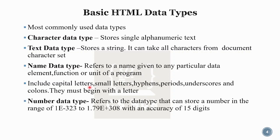The number data type means it can store any number. The range is from 1e-323 to 1.79e+308 — a vast range of positive and negative numbers. Any number — real, fractional, or integer — can be used, with an accuracy of 15 digits. The floating point precision is 15 digits.